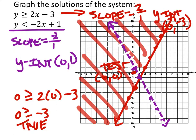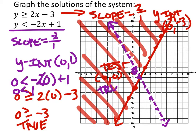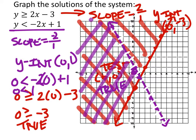And we can test 0, 0 again. So I got 0 is less than negative 2 times 0 plus 1. And that would give us that 0 is less than 1, that's true. So it's true also for the purple line, and we would then be shading. I guess we can kind of skip that part, just shade that in.